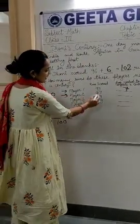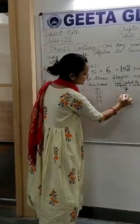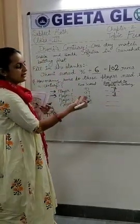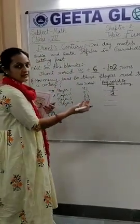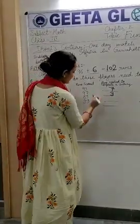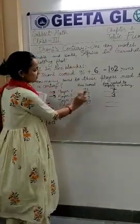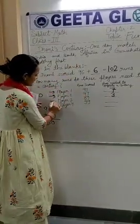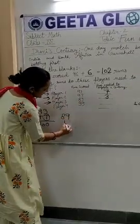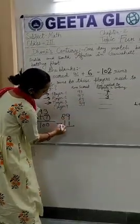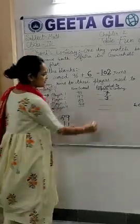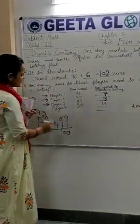The second player के 97 runs हैं। Total पूरे करने के लिए कितने चाहिए होंगे? 97, 98, 99, 100 — तीन runs और चाहिए। Player 2 की century 3 runs से पूरी होगी। Player 3 के 89 runs हैं। 89 में अगर आप 11 add करोगे तो उसकी century पूरी हो जाएगी। That means 11 is the answer.